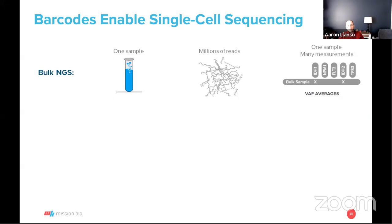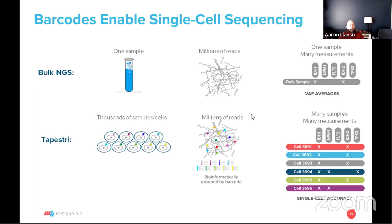How does it work? In bulk sequencing, we grind up a sample, extract nucleic acids, prepare a library, and align millions of reads to get a variant allele frequency. With the Tapestry single-cell approach, we isolate individual cells into droplets. We use a cell-identifying barcode appended to each amplicon generated — this amplification-based targeted approach to genotyping enables us to generate a library that identifies each cell. Once the barcode is appended, we resume a bulk sequencing approach and bioinformatically deconvolve the data to ascribe multiple variants to individual cells.